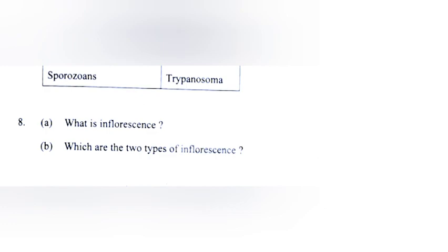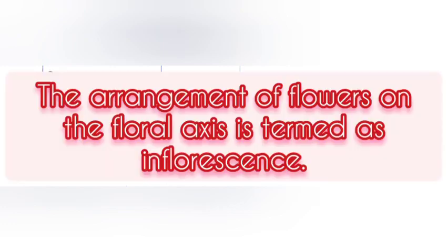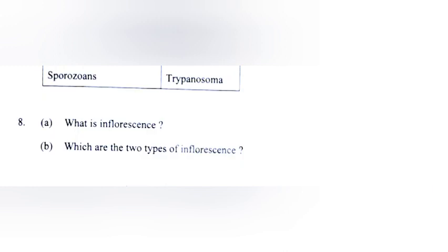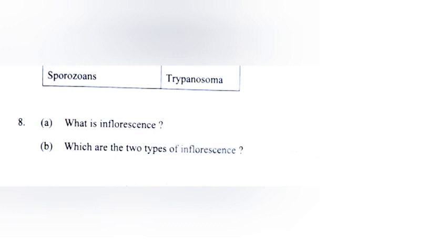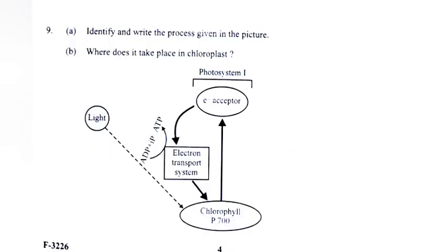A) What is inflorescence? Answer: The arrangement of flowers on the floral axis is termed as inflorescence. B) Which are the two types of inflorescence? Answer: racemose and cymose inflorescence.